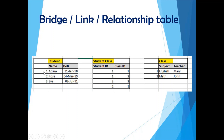In the student-class bridge table, let's store the information for Adam. Adam has a student ID of 1. He takes English, so one record is inserted with student ID 1 and class ID 1 for English. He also takes Math, so another record is inserted for Adam with his student ID and the class ID for Math. This is how records are inserted in the bridge table.